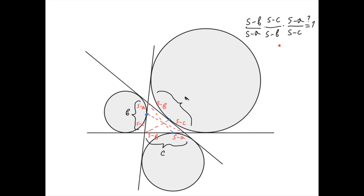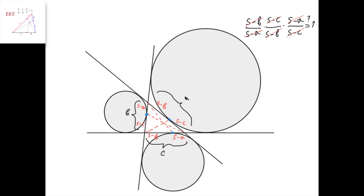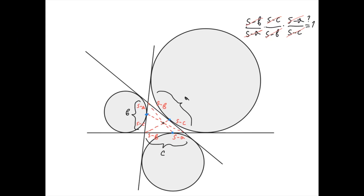Note that in this expression all the things cancel out: s-b cancels out here, s-c cancels out here, and s-a cancels out here. Therefore, this expression always equals 1, and hence these three lines always intersect at one point. This point is called the Nagel point of the triangle.